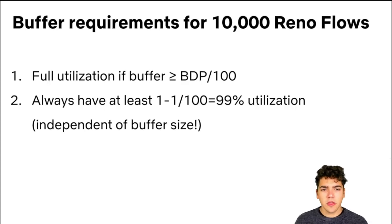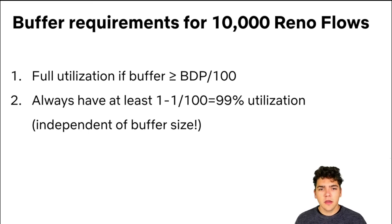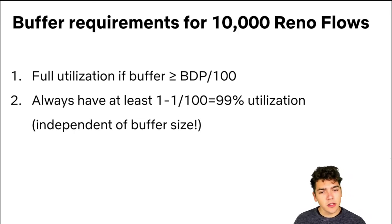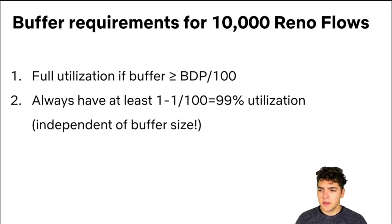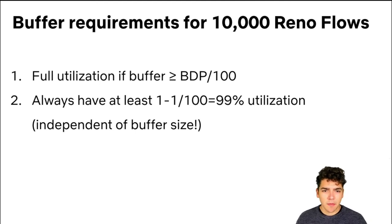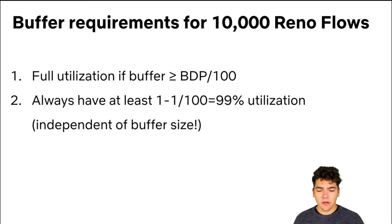To give a concrete example: suppose a link is shared by 10,000 Reno flows, which is a natural setting for a big internet link. Our result says you can get full link utilization with a buffer 100 times smaller than required for one TCP Reno flow. And no matter what buffer size you pick, utilization will always be at least 99%. So if you're happy with 99% utilization, it doesn't matter what buffer size you pick.